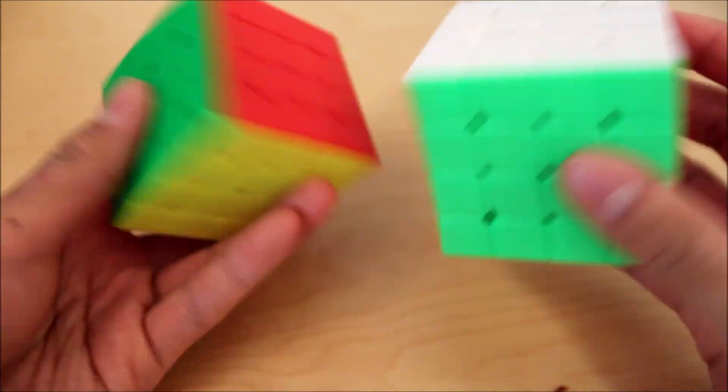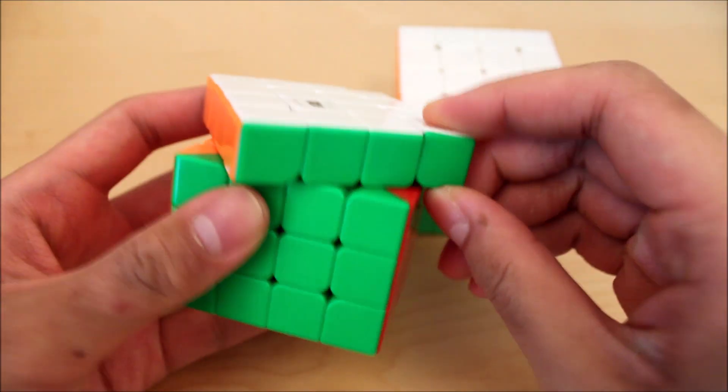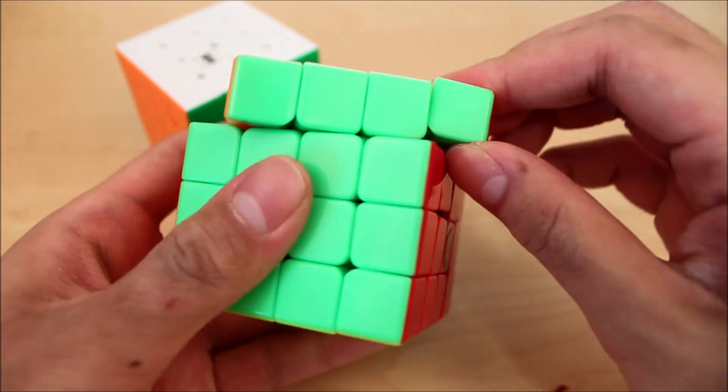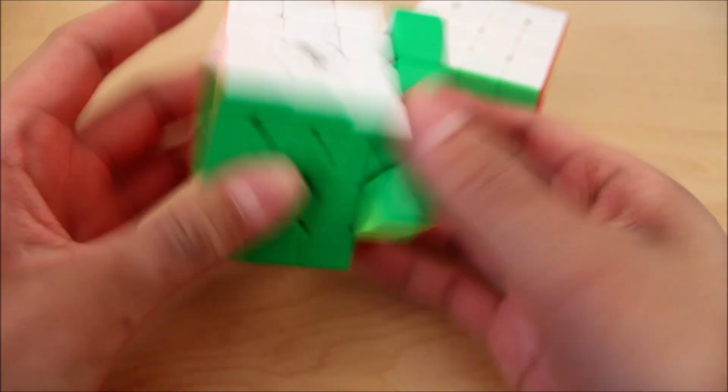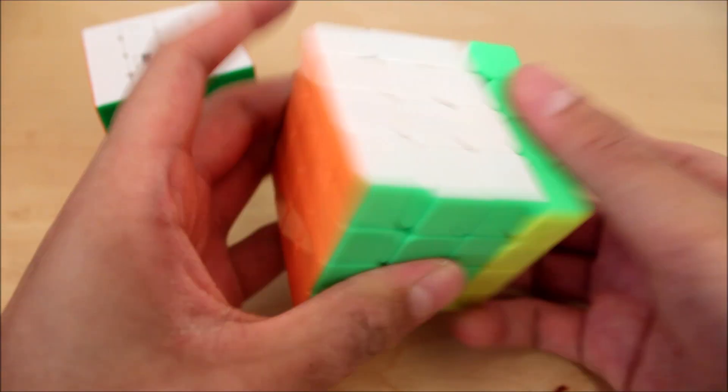Since the mechanisms are pretty similar, everything else should be pretty similar, so corner twisting is pretty good on both. Corner cutting is also pretty good on both. Corner cuts here, corner cuts here, so it's pretty similar there.